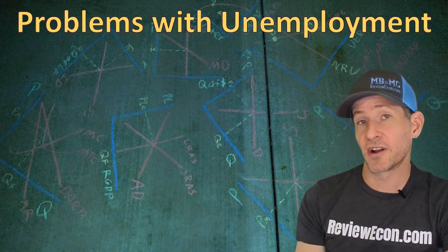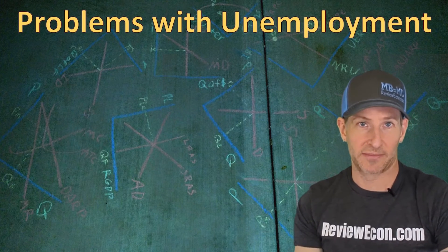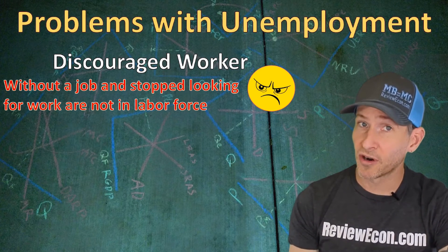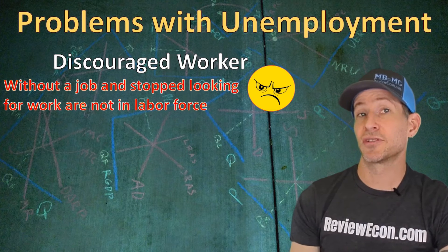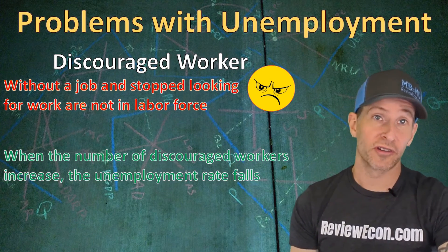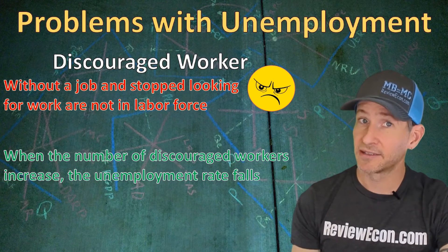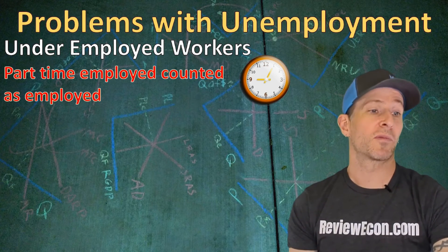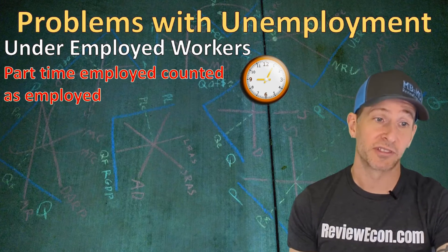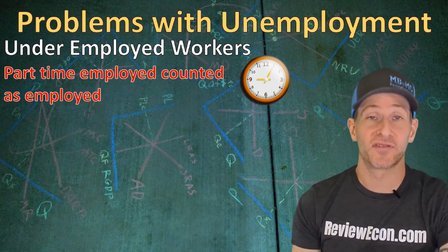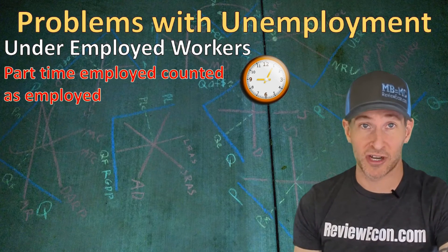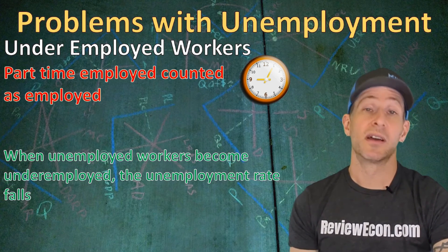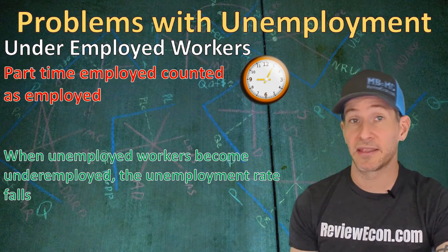The unemployment rate doesn't always give us an accurate picture of the labor market. First, discouraged workers — people who want to work and are available, but have stopped looking — are not counted as part of the labor force. When unemployed workers become discouraged, the unemployment rate falls, making the labor market look better when it has not improved. Second, underemployed workers have part-time work but want full-time work. Whether you work one hour or 40 hours a week, you are counted as employed. So when unemployed workers find part-time jobs, the unemployment rate falls even if conditions have only slightly improved.